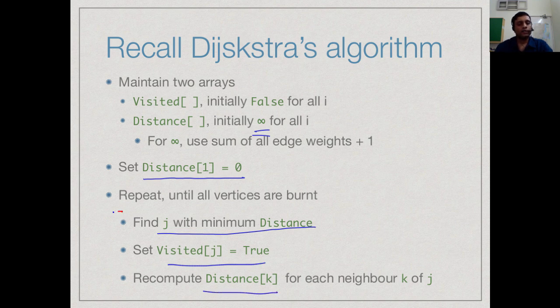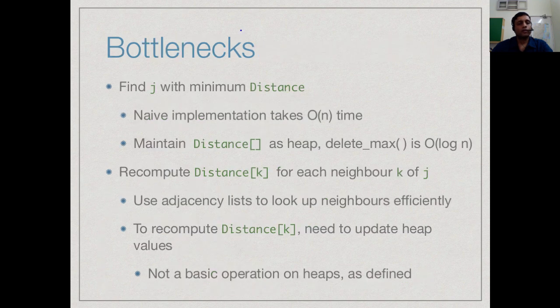The bottlenecks were really at this part of the loop. The bottlenecks are first to find the j with a minimum distance. The naive implementation would take us order n time because we would have to scan all the unvisited vertices which are not in any particular order of distance and among them find the minimum.